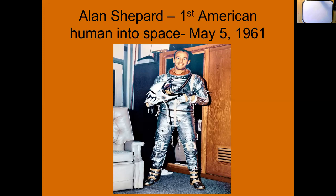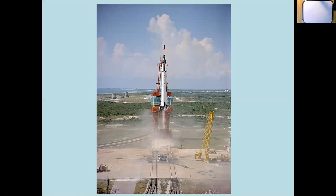We decided enough is enough - there's still one place where we can beat the Russians and that's the moon. So our plan was to send one person up at a time, then a couple, then three people to get to the moon before the Russians. Our first person we sent into space was Alan Shepard, the first American human into space. He did not orbit the earth like Gagarin did - Gagarin orbited something like three times. Shepard just went up on a 15-minute mission and came right back down, but at least we got a person into space.